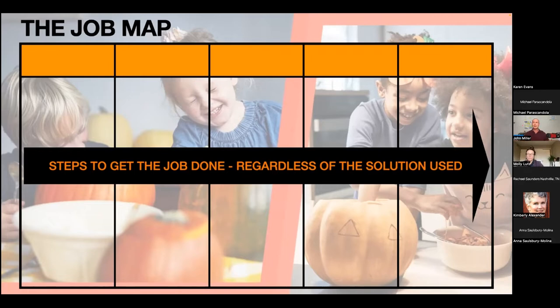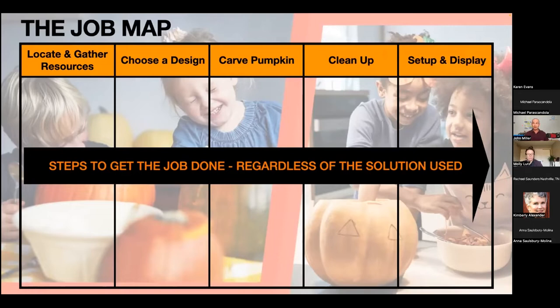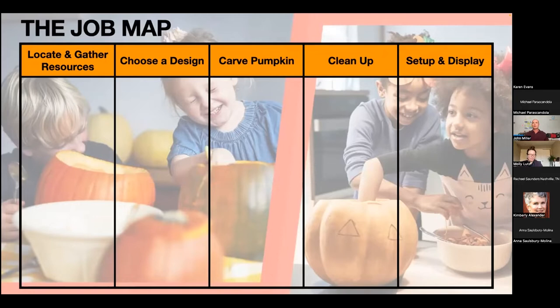We're not talking about solutions here — we're just talking about: I'm trying to make a jack-o'-lantern with my kids, we don't know how to do it very well, and what are the steps we would take to get that job done? We map out the job at a high level. Think of this as a customer value stream. First, they might locate and gather resources — find the pumpkin, get information about how to carve one. Then choose a design, carve the pumpkin, clean up, and then set up and display it.